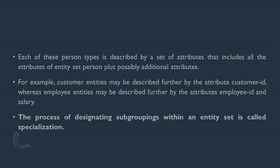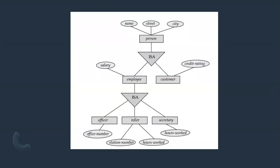The process of designating subgroupings within an entity set is called specialization. Dividing an entity into two different entities that have some special properties is called specialization. This diagram follows a top-down approach.